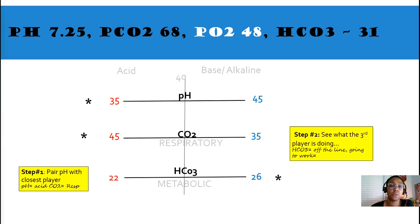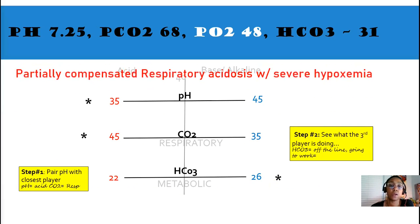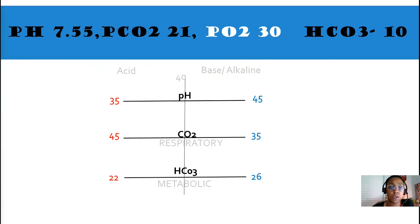Our interpretation of this ABG is respiratory, partially compensated respiratory acidosis. The third player is off the line, however, the pH is still out of range. But, in time, bicarb is a pretty slow way for compensation. But, it will eventually get there.